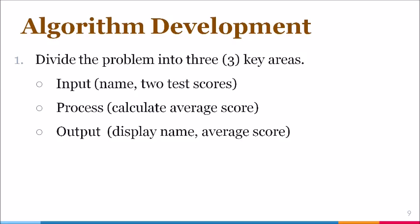In using our problem statement, we saw where a number of items were being requested for entry. The name of the student as well as the two test scores that were to be entered. We also saw where the problem statement mentioned that we need to calculate the average score as well as display this average score along with the name of the student. So these three areas, input, process, output, that is what we need to identify first within our problem statement.